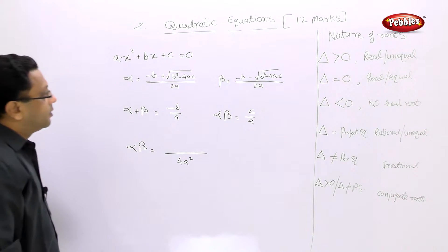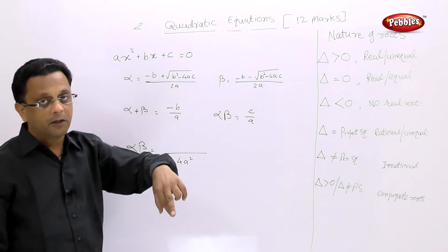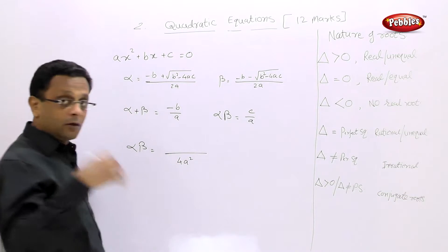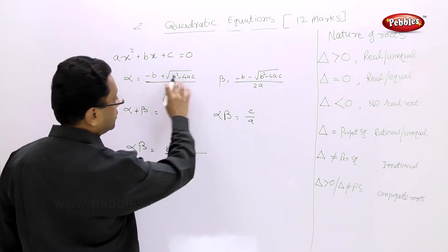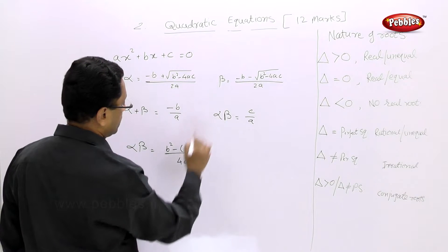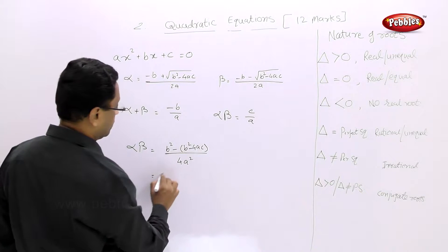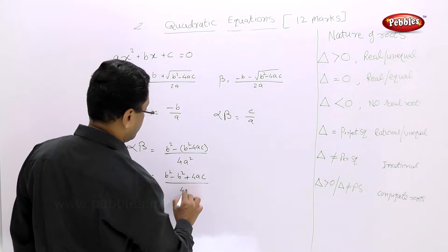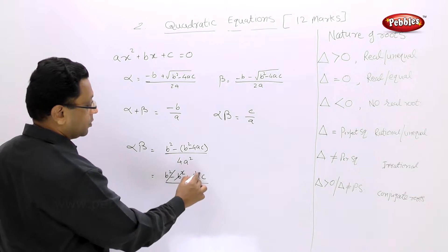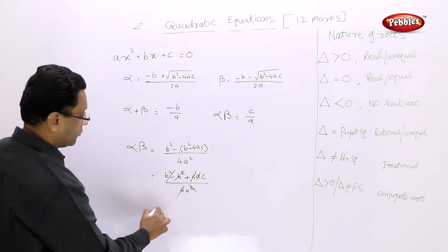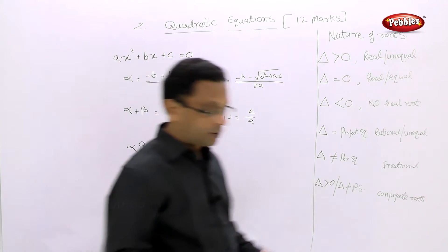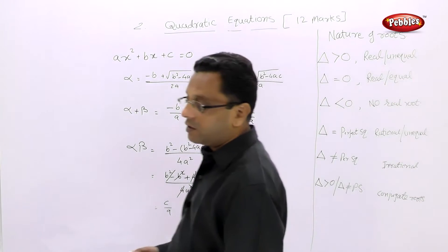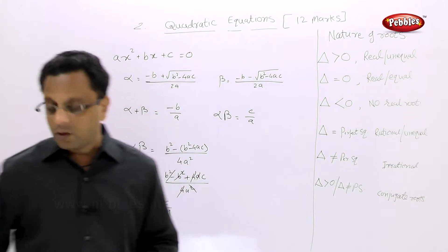For alpha times beta, the denominator is 4a². We see the numerator is of the form (a+b)(a-b), which equals a² - b². So we get b² - (b² - 4ac) = 4ac upon 4a², and after cancellation we get c/a. I have shown you how you get alpha + beta and alpha × beta. Now we will solve examples based on this.